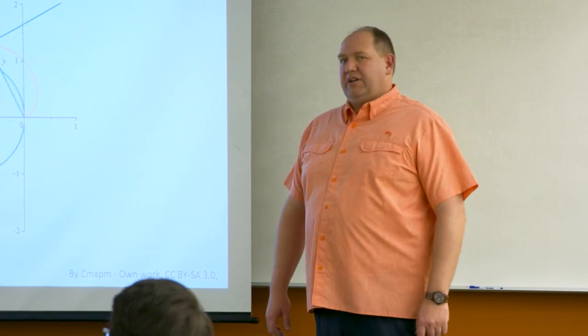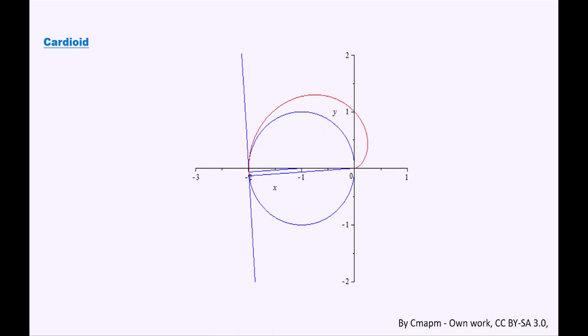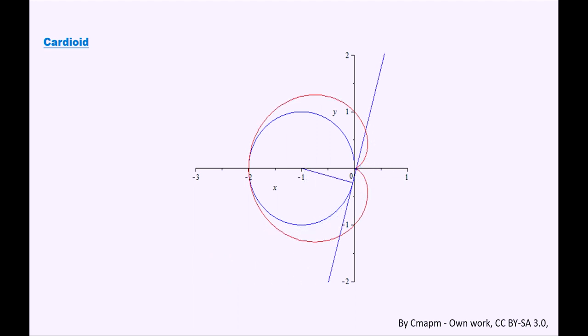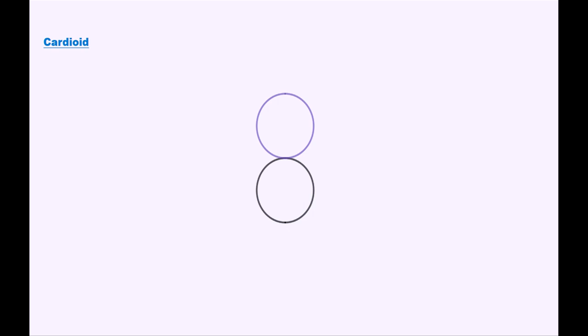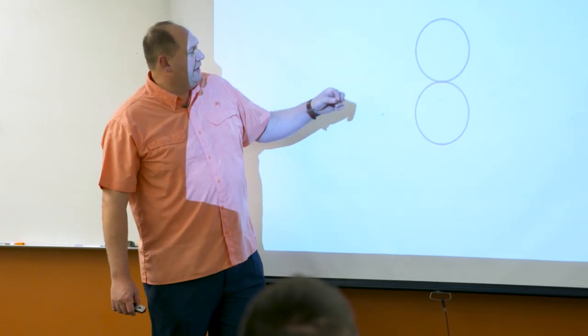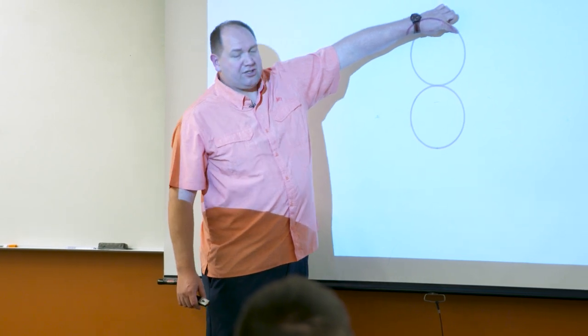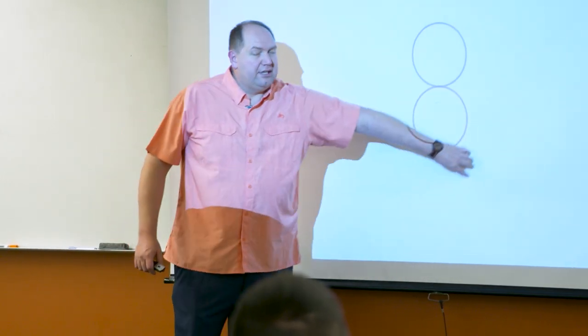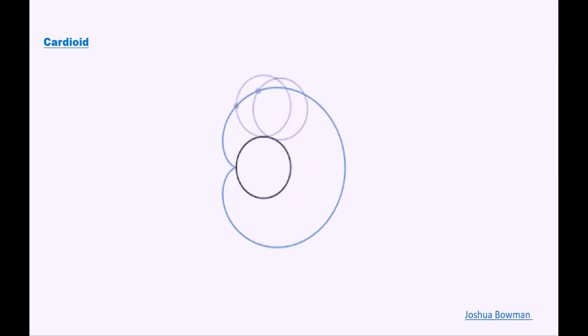That is a classic construction of the cardioid. Another very famous construction is a continuous one: I have two circles of equal radius just touching each other, I put my pen at a certain spot on the top circle, rotate that circle around, and I get a cardioid. That cardioid's flipped over because it's spinning that way, but if I spun it the other way it would be the same direction.